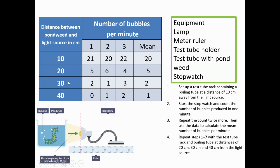As the distance increases, the number of bubbles decreases. Distance gets bigger, and we can see that the number of bubbles decreases. What does this mean? As the light intensity decreases — because it gets further away — we can see that the rate of photosynthesis also decreases. It is a skill to be able to look at numbers from our data and make conclusions about the real world.